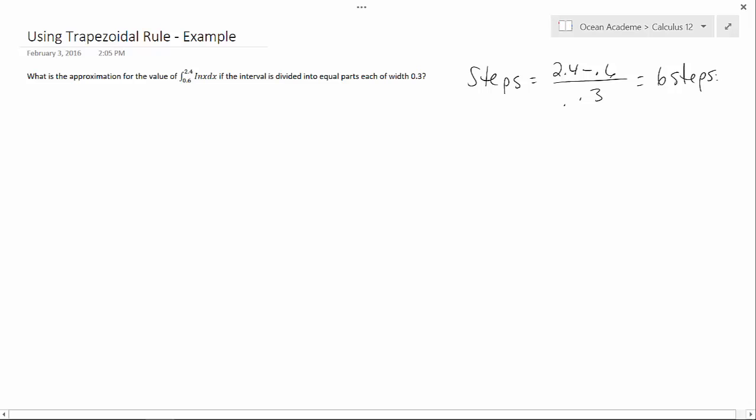Now the trapezoidal rule states that change in x, which is our width, divided by 2, we need to multiply that by y0 plus 2y1 plus 2y2 all the way to yn.